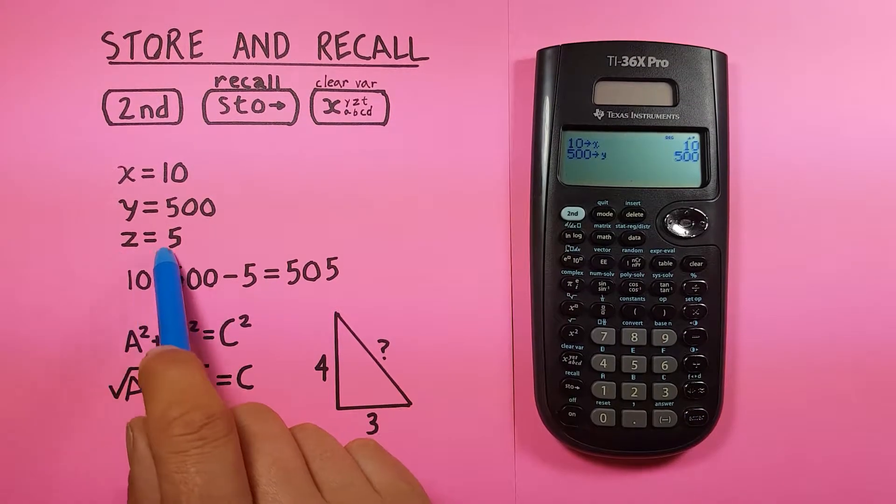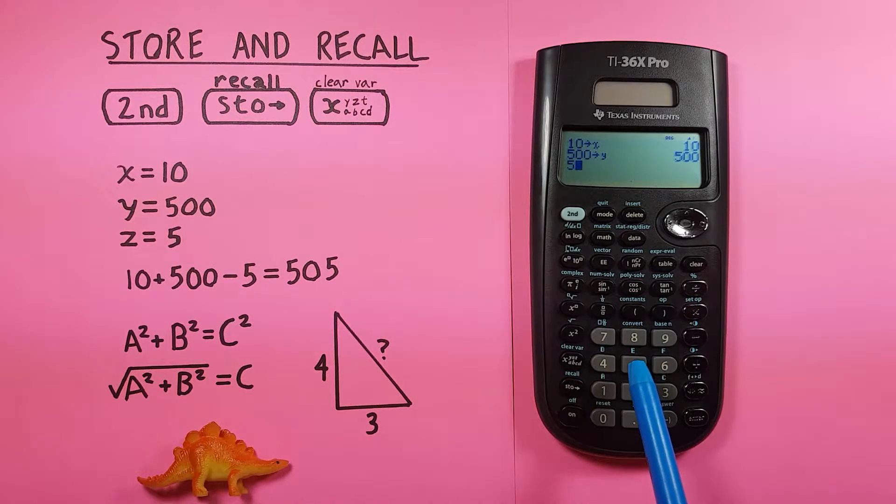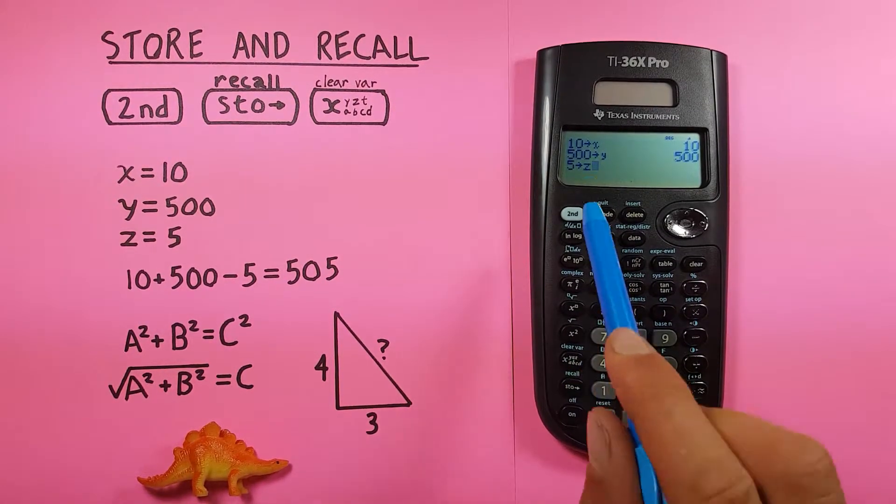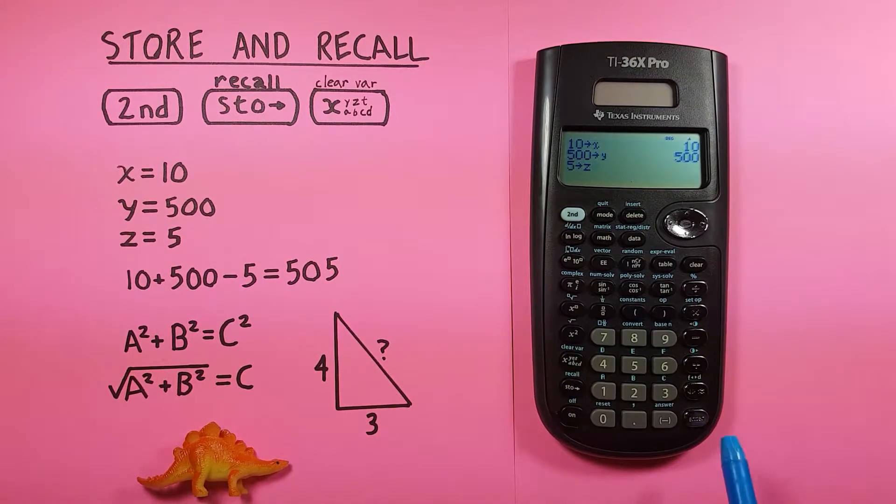And Z into 5. Again, we press 5, store, 1, 2, 3, there we go, 5 into Z, enter.